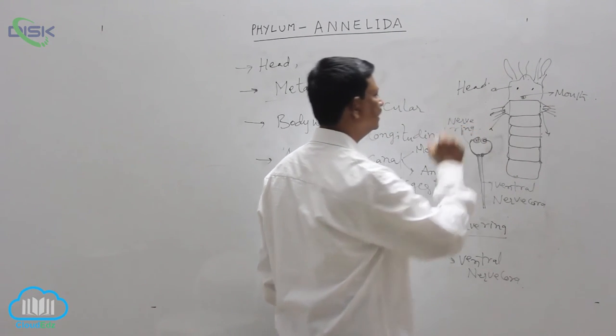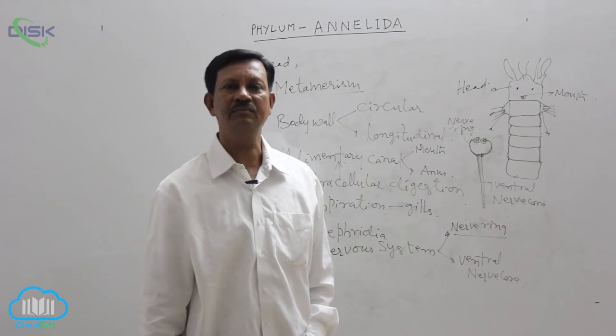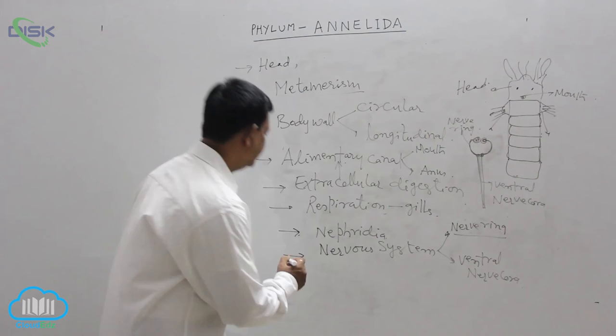Such type of nervous system is present in the phylum annelida. It controls and coordinates all the activities of the body.